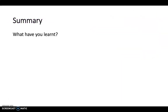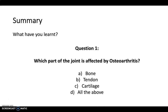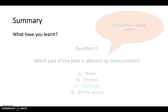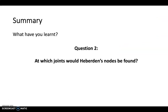Revisiting the questions: which part of the joint is affected by osteoarthritis — the bone, the tendon, the cartilage, or all of the above? The answer is cartilage. Remember, osteoarthritis is a cartilage problem. It's important to distinguish this from rheumatoid arthritis, which is a synovial problem.